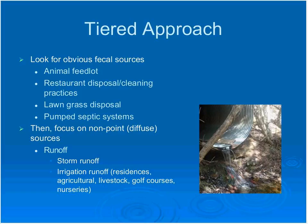After addressing obvious sources, focus on more diffuse sources like runoff — including irrigation runoff. Golf courses and nurseries are areas people often overlook, but the runoff from these areas could potentially contribute high amounts of nitrates and phosphates that bacteria love and thrive on.